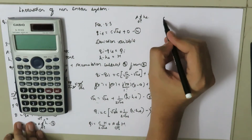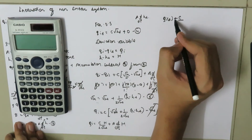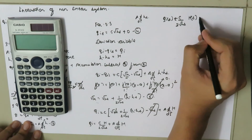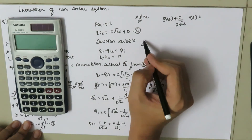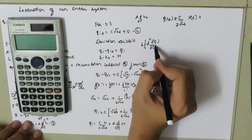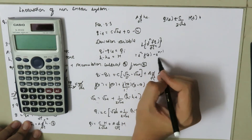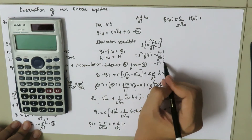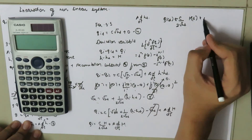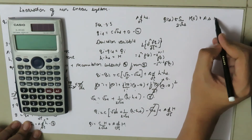Taking the Laplace transform of both sides. Using the rule that the Laplace transform of d^n f(t)/dt^n equals s^n F(s) minus s^(n-1) f(0) minus s^(n-2) f'(0), and since A is constant, the derivative term becomes A·s·H(s).